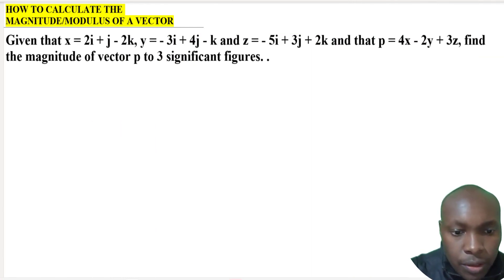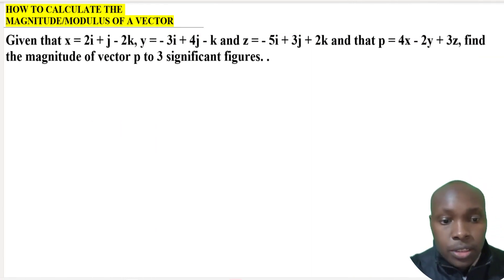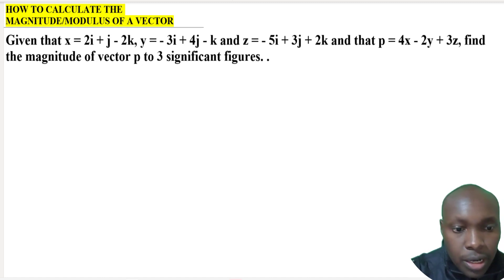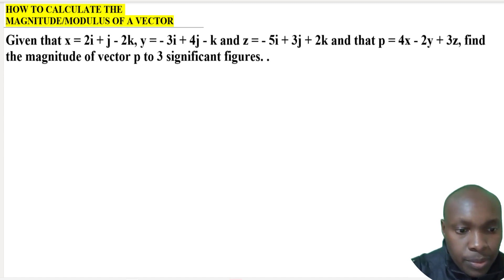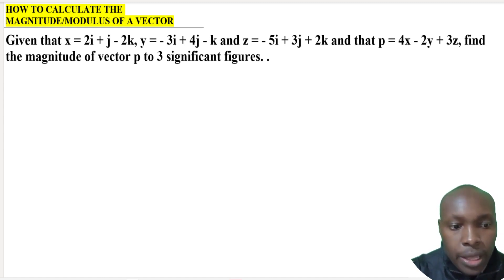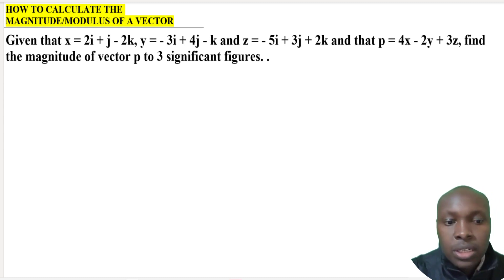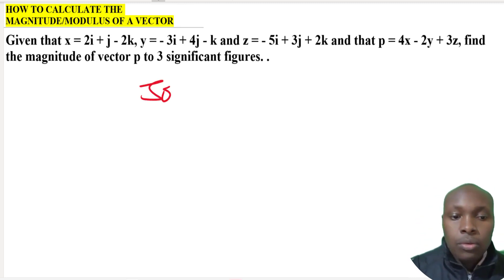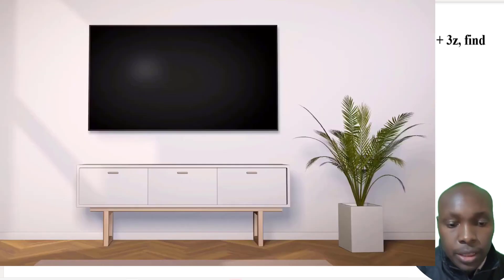How to calculate the magnitude or modulus of a vector. Given that x equals 2i + j - 2k, y equals -3i + 4j - k, and z equals -5i + 3j + 2k, and that p equals 4x - 2y + 3z, find the magnitude of vector p to 3 significant figures. Let's go to the solution and see how we're supposed to solve that question.